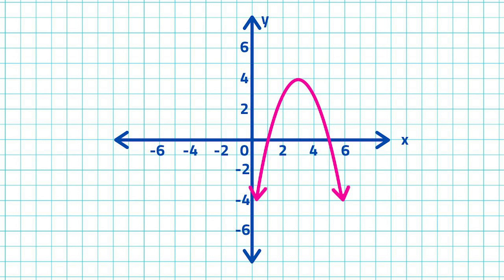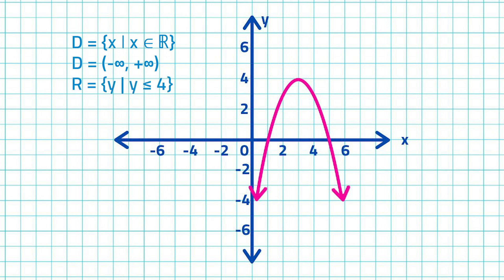The graph extends infinitely downwards. Therefore, the domain is the set of all real numbers. Domain is the set of x such that x is an element of all real numbers. In interval notation, domain is from negative infinity to positive infinity. The highest point in the graph is (3, 4) and all points on the graph are below this point. The range of the function is: range is the set of y such that y is less than or equal to 4. In interval notation, range is from negative infinity to 4, inclusive of 4.